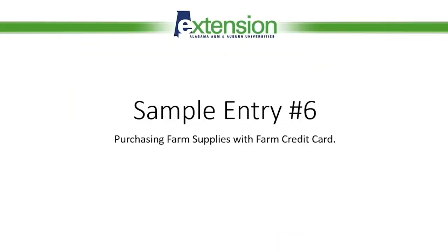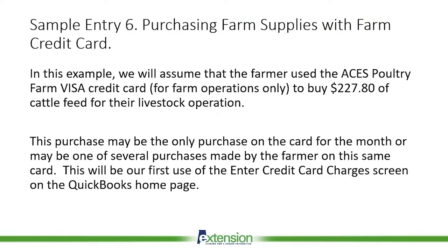Our next entry is sample entry number six: purchasing farm supplies with a credit card. In this example, we will assume that the farmer used the ACES Poultry Farm Visa credit card, which is reserved for farm operations, to buy $227.80 of cattle feed for their livestock operation. This purchase may be the only purchase on the card for the month, or maybe one of several purchases. This will be our first use of the enter credit card charges screen on the QuickBooks homepage.